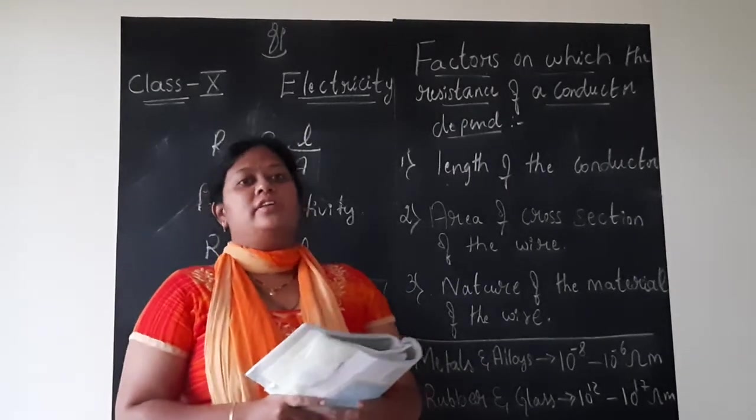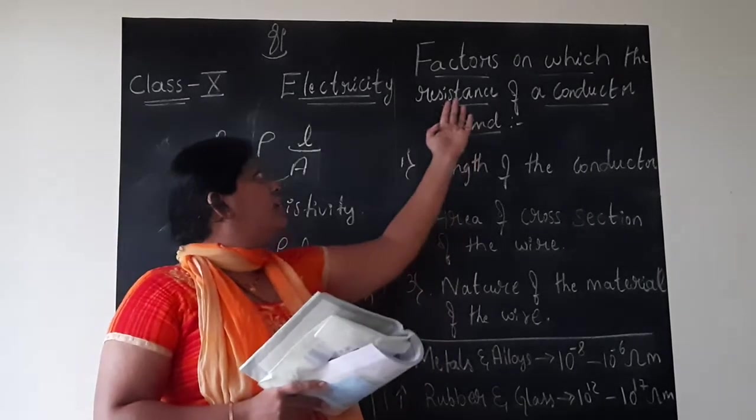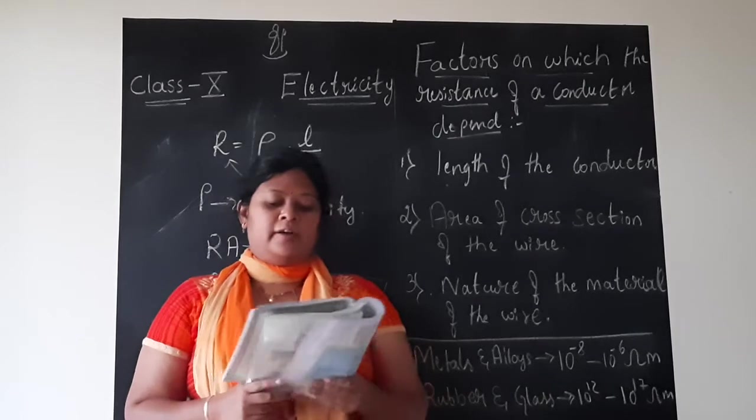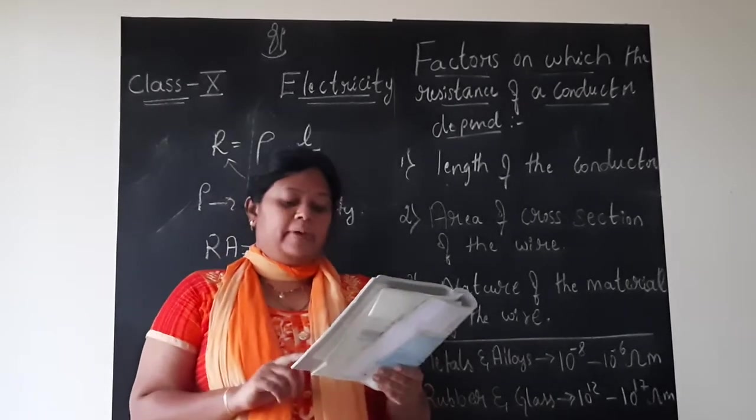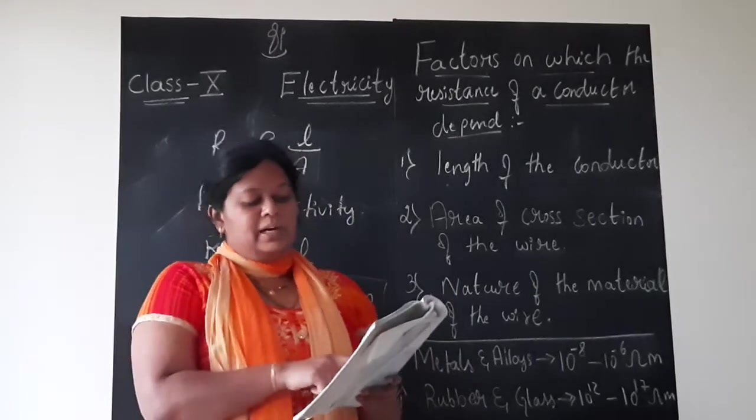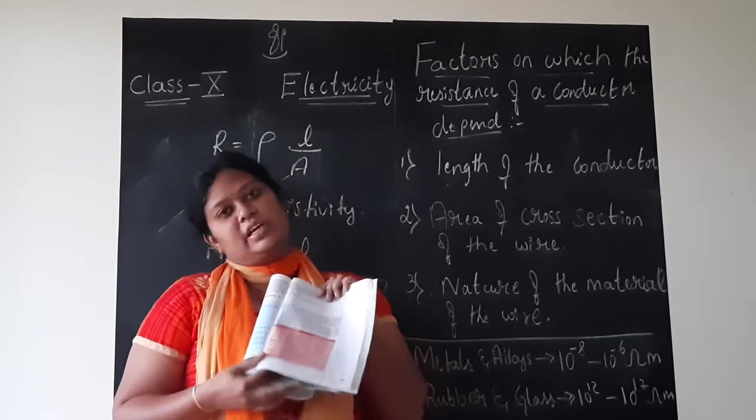In the previous session children, we studied the concept of resistivity, that is the factors on which the resistance of a conductor depends on. I said you in page 101 in your textbook, there is table 12.2 which clearly explains the resistivity of various materials.